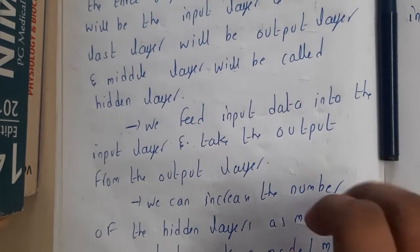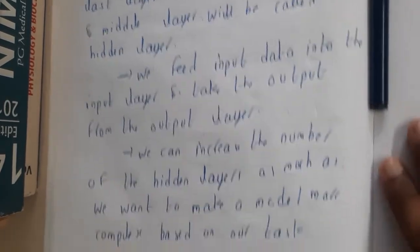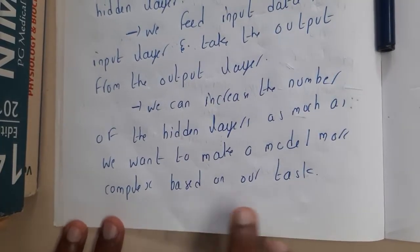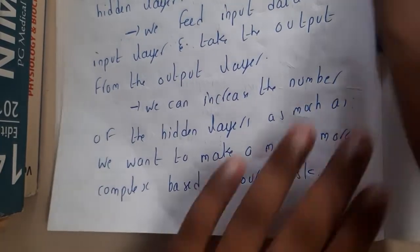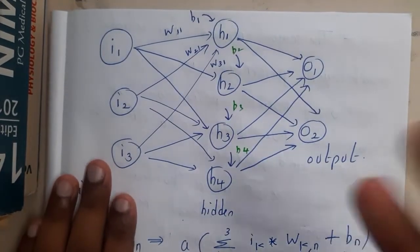We feed input into the input layer and take the output from the output layer. These hidden layers' logic is a bit complex, so that is the reason why we never think of the hidden layers. We can increase the number of hidden layers as much as we want to make the model complex based on our task.